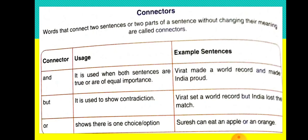'But' is used to show contradiction — 'Virat set a world record, but India lost the match.' Here Virat played well, but India also lost the match — these two ideas contradict each other. 'Or' shows there is one choice or option — 'Suresh can eat an apple or an orange.' Suresh can eat either apple or orange — it is his wish. This is how connectors are used.